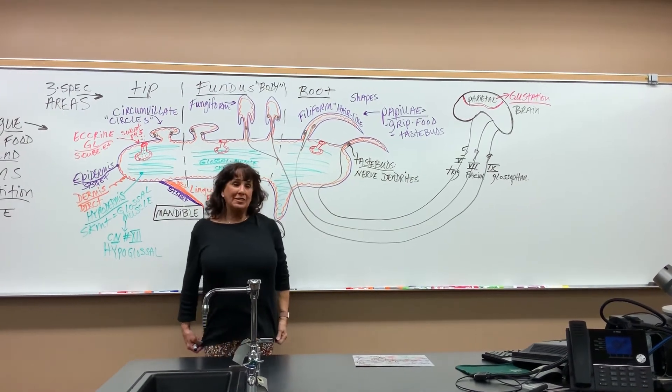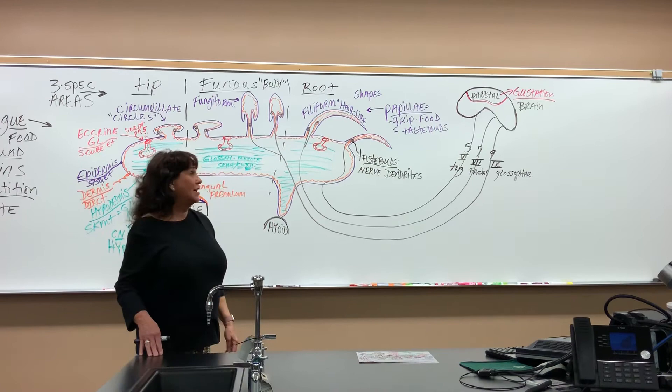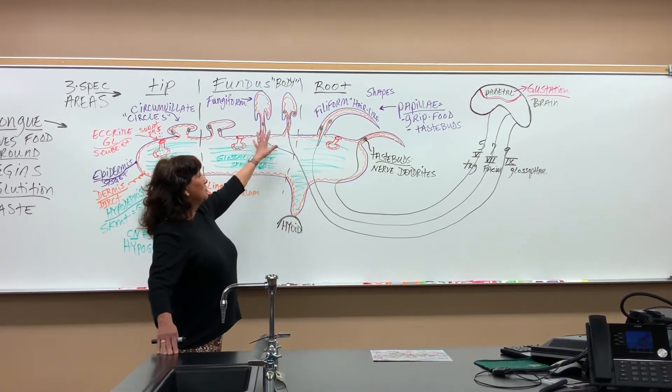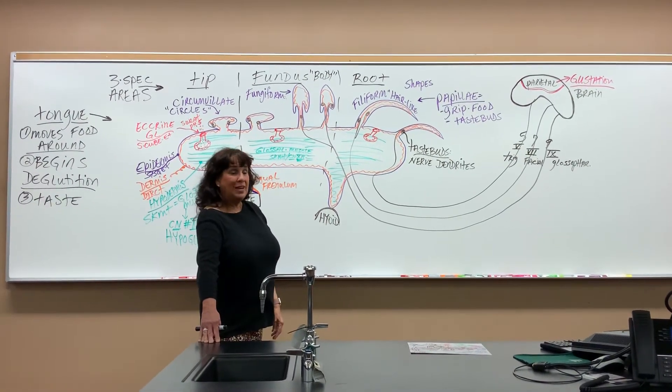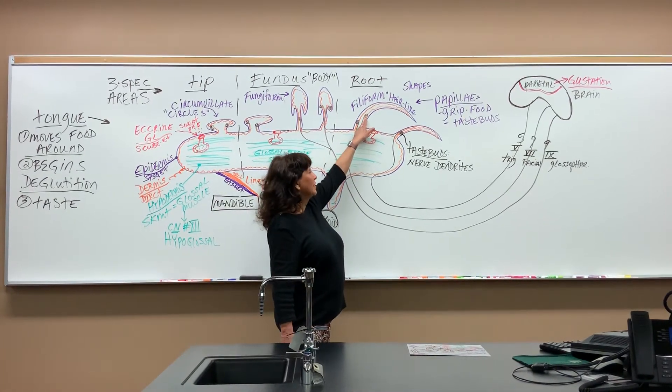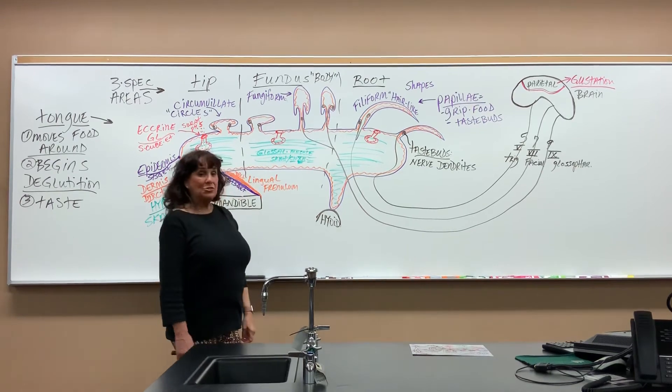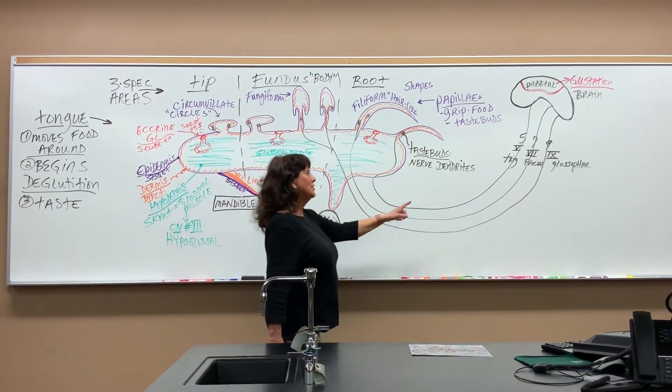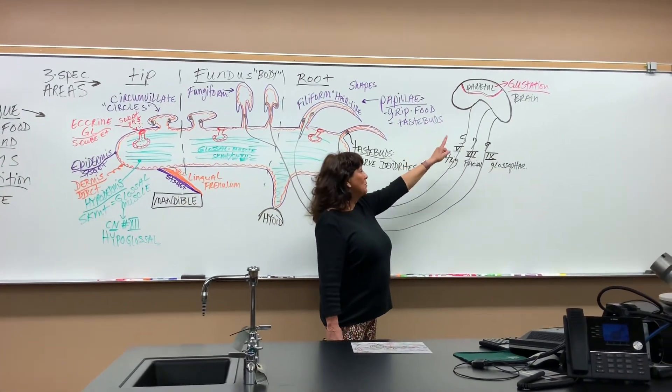We're just going to call them all papillae in our lab test. But in lecture, now you know we have three different shapes, and they all have taste buds in the dermis of the skin. What makes your taste buds? We have three nerves coming from the brain.